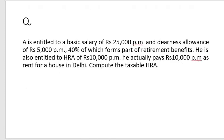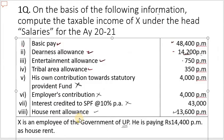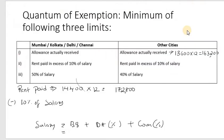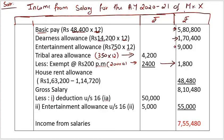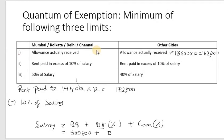For the HRA salary definition, salary includes basic salary plus DA forming part of terms of employment, plus commission as a percentage of turnover. Here basic salary is ₹4,84,000 and total salary as per definition comes to ₹5,80,800. Therefore 10% of salary is 10% of ₹5,80,800.